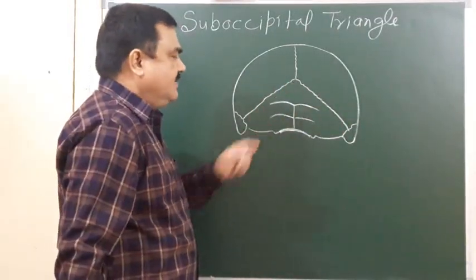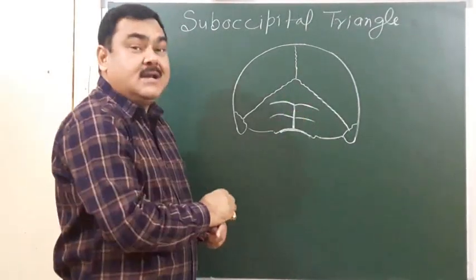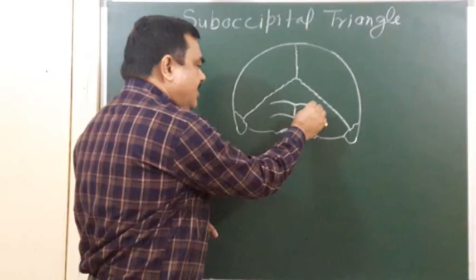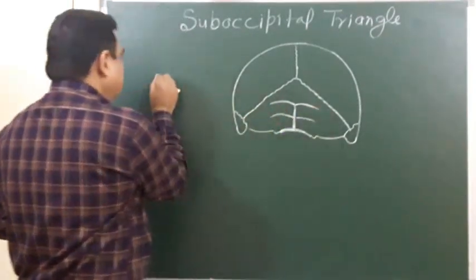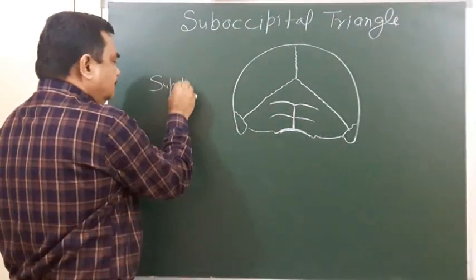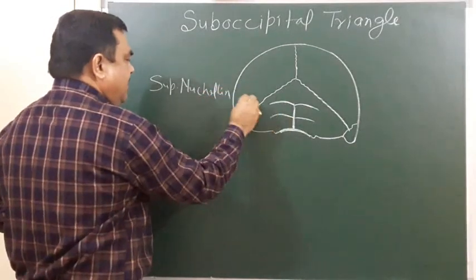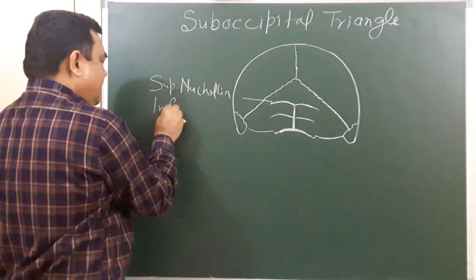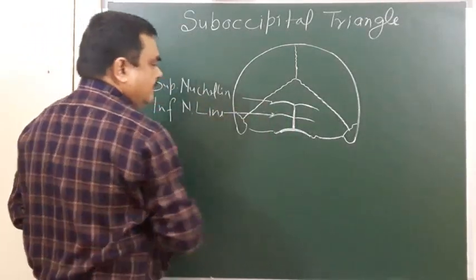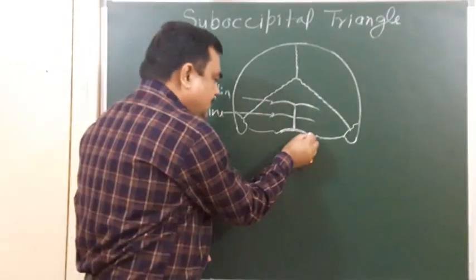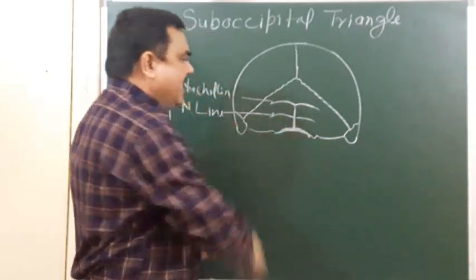This is the lambdoid suture, this is the occipital bone. Here is the external occipital crest, this is the superior nuchal line, this is the inferior nuchal line. This is the posterior margin of the foramen magnum.